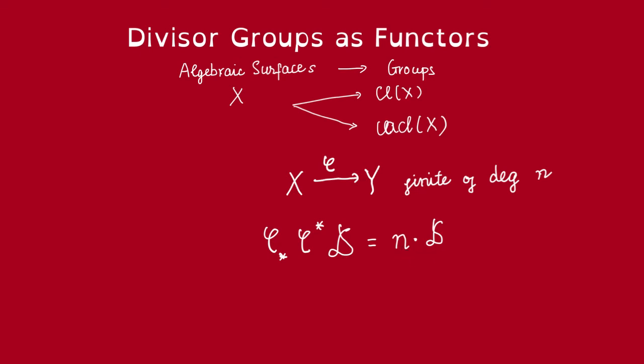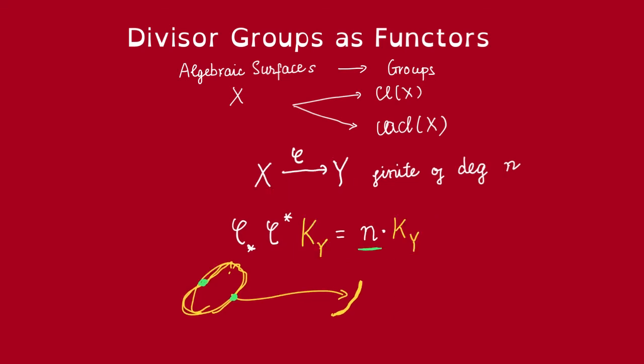Intuitively, we can see that locally as follows. Say D is a Cartier divisor, so locally it's cut out by some function, and let's say these are the local zeros of that function. Then its pullback locally is just the pre-image of that function under the map φ. The push-forward would send this again back. But remember, to account for the fiber, the size of the fiber, we need to multiply it with the degree. So then the push-forward is again D, but multiplied with the degree of φ. This is true, in particular, for the canonical divisor on Y.